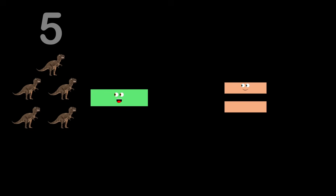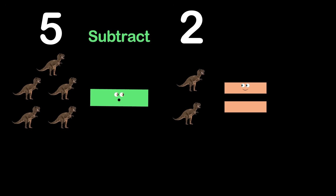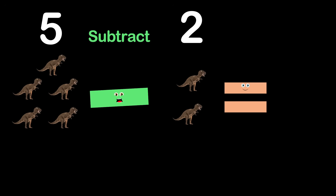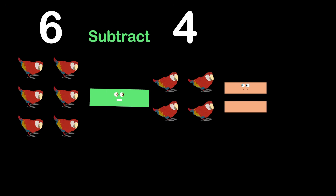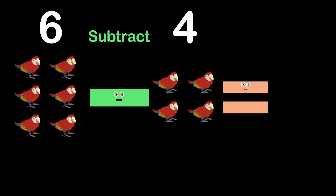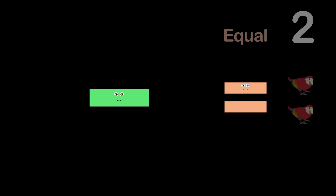Here we have five T-rexes, as you can plainly see. But if you subtract two, the final amount equals three. But if you have six macaws, but you only want two, you would subtract four from six to equal two. This equation's through.